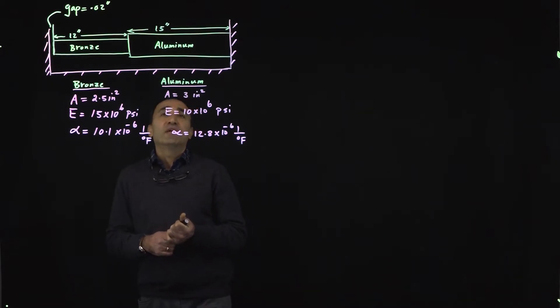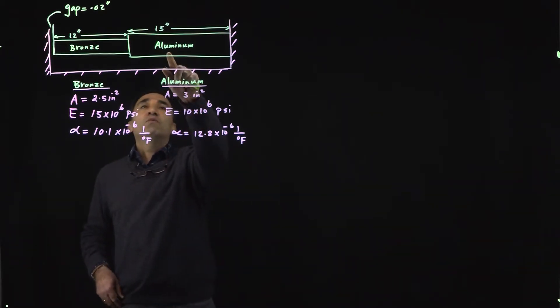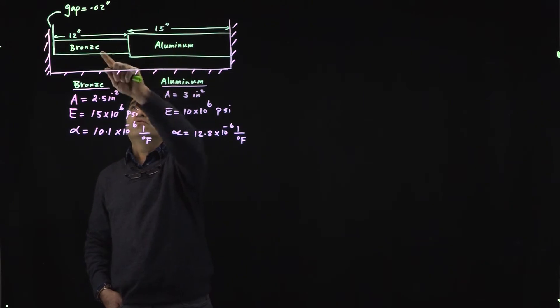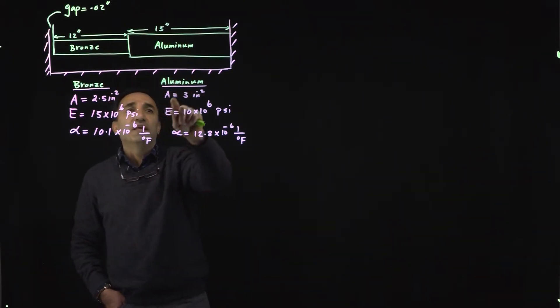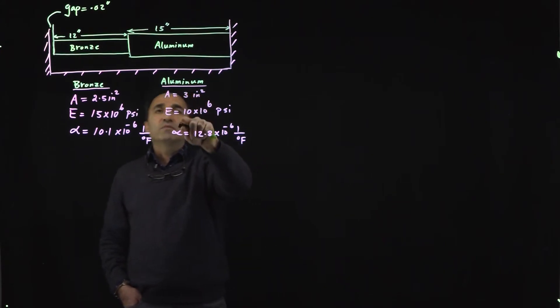What we have here are two bars: one is made of aluminum and the other one is made of bronze. They are put together. We have all the information regarding these two bars here. Fifteen inches for the aluminum, 12 inches in length, and these are all the properties that we need.